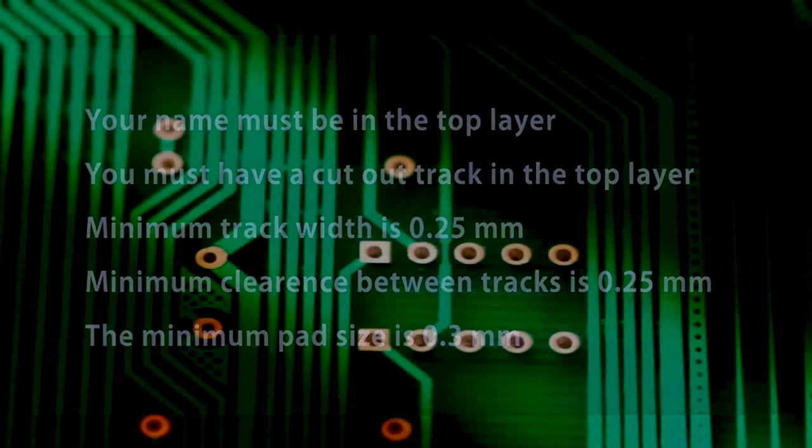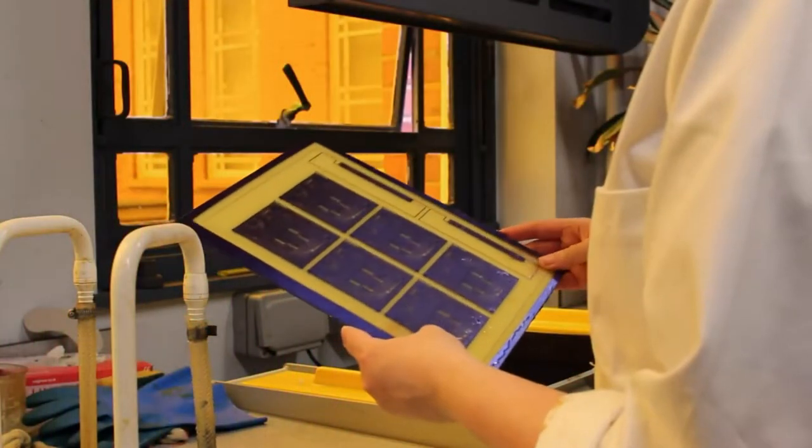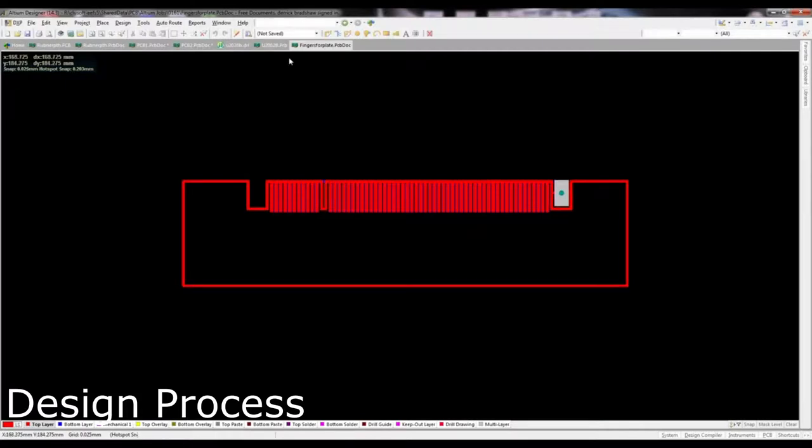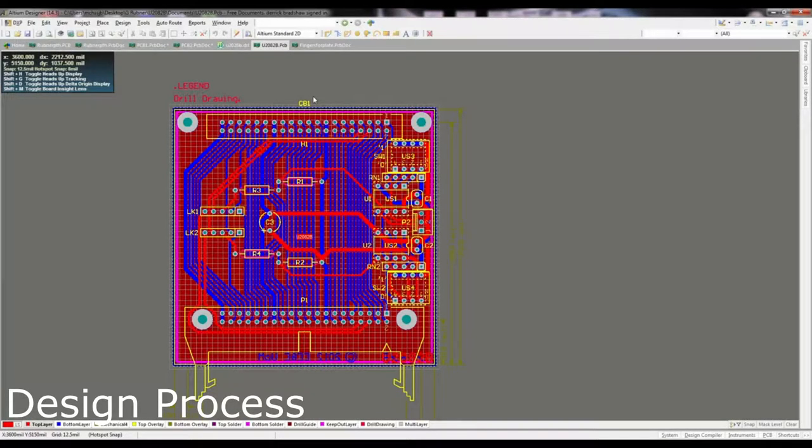In this video we'll look at the production process and highlight the stages where your designs have direct impact. The process requires you to create designs using an Altium template which are then transposed into Gerber files.